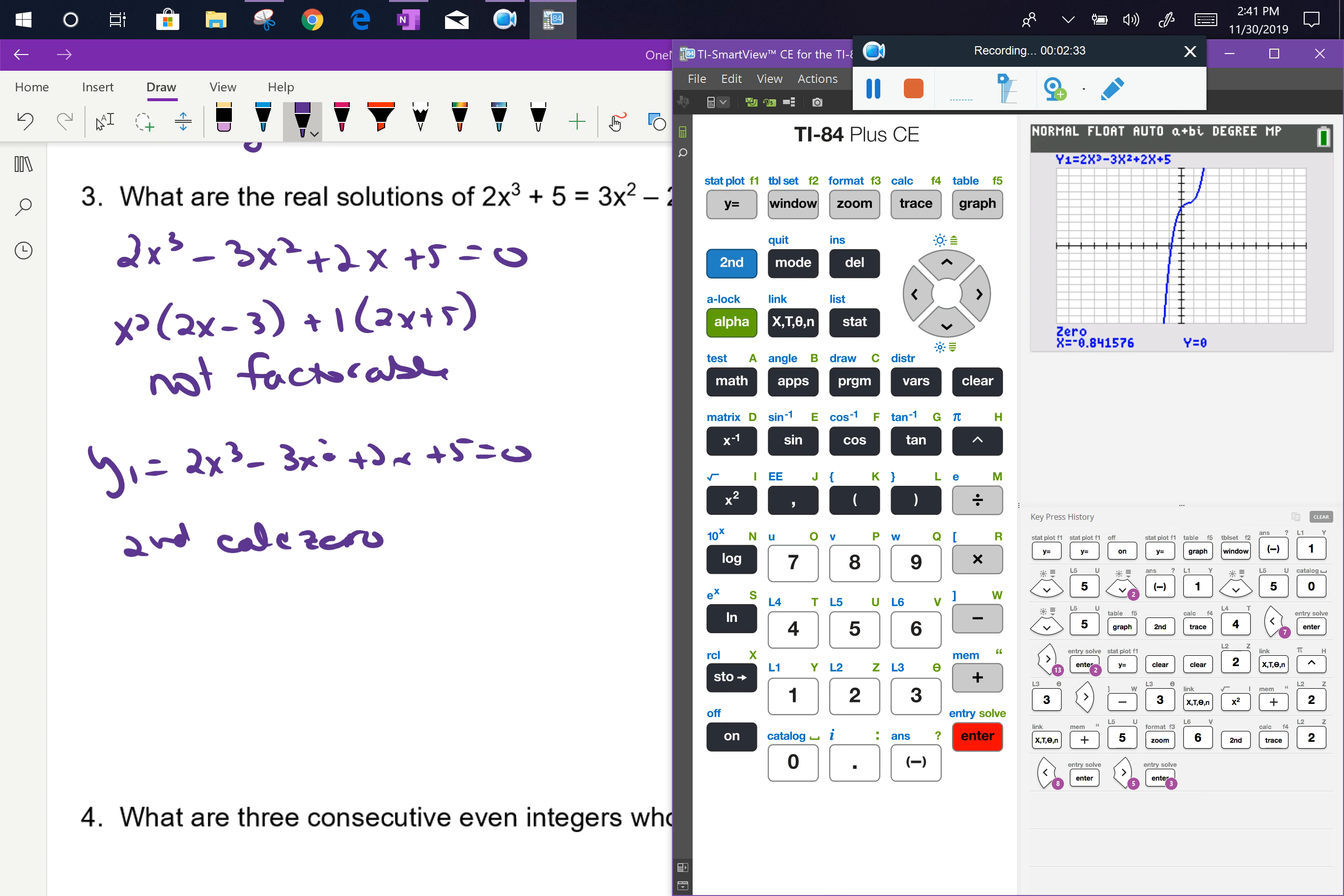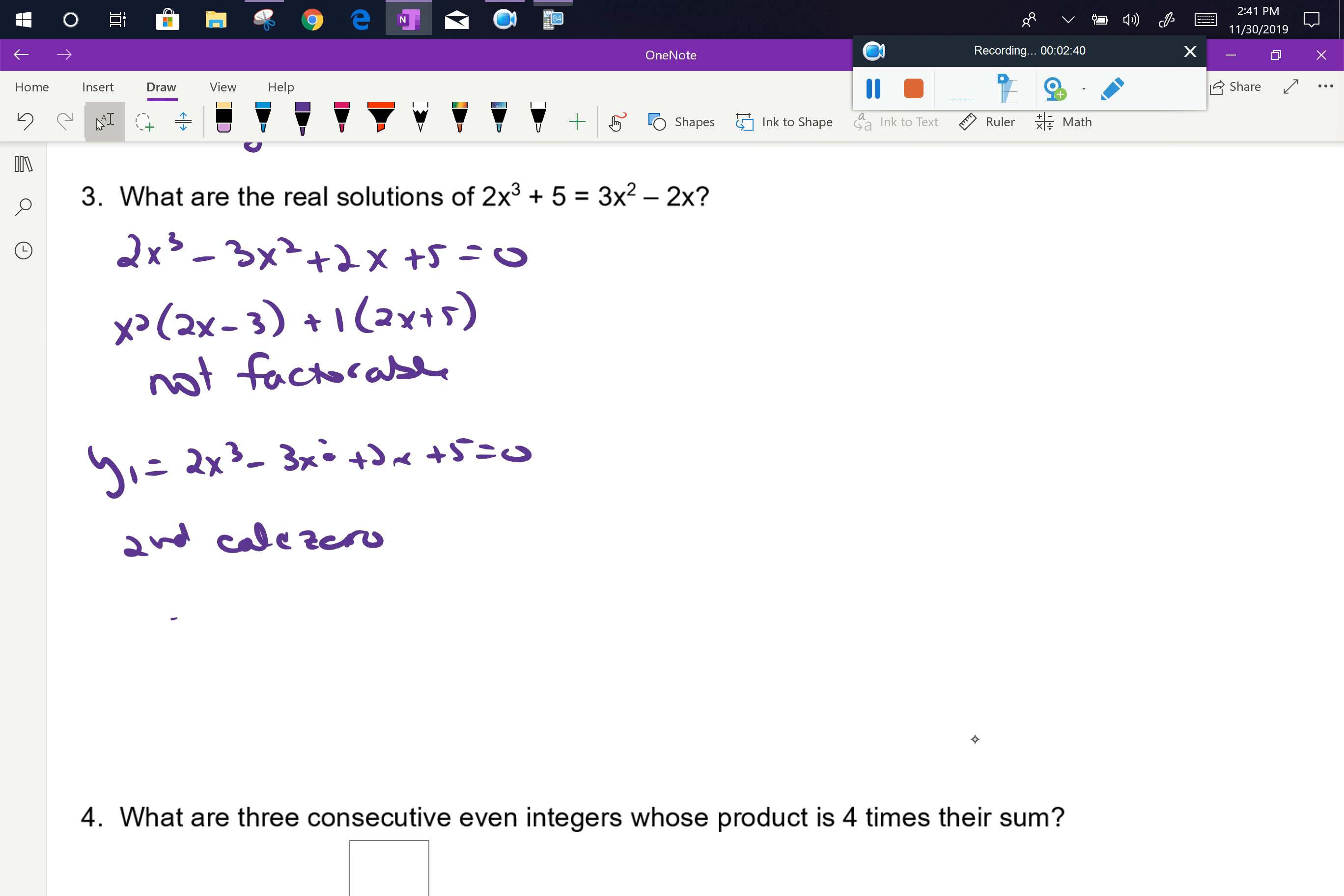And I get the point negative 0.84 approximately comma zero. So I've got the point negative 0.84 comma zero. So since I'm only looking for real solutions, I can see that x is approximately equal to negative 0.84.